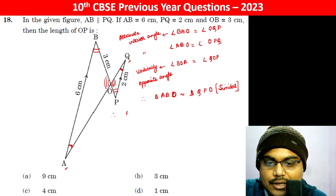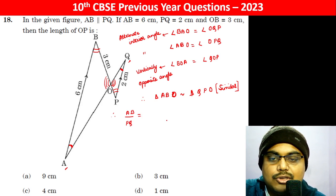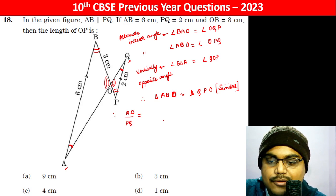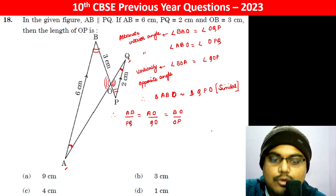So therefore, we can write AB divided by PQ. Same ratio में होना चाहिए. Should be equal to AO divided by QO, should be equal to BO divided by OP.